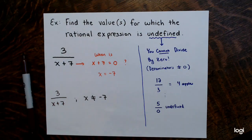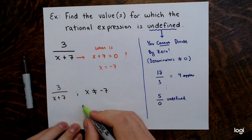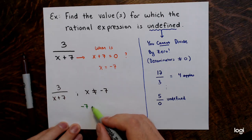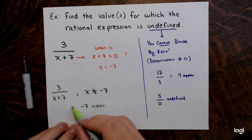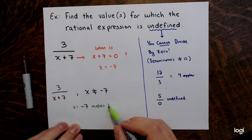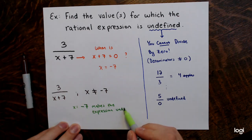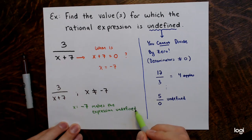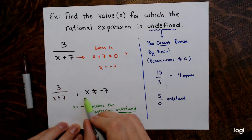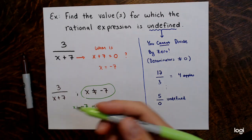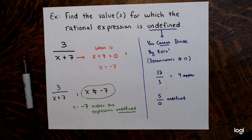So back in this expression, 3 divided by x plus 7, x cannot be negative 7. Because if x were negative 7, we'd have 3 divided by zero — that's like having 3 objects and wanting to give them to zero people. That's undefined. So x equals negative 7 makes this expression undefined.